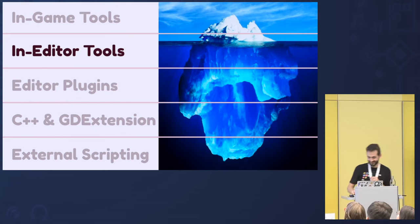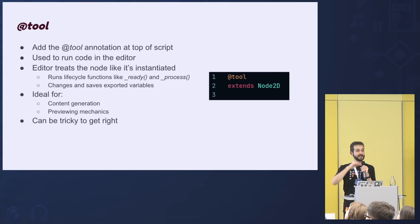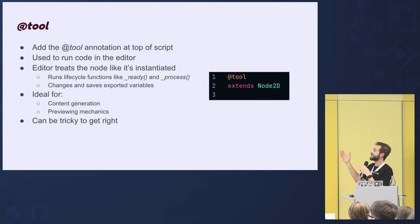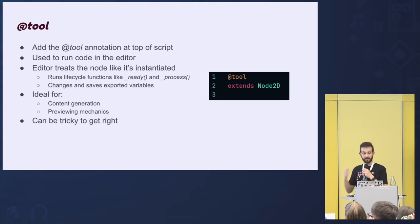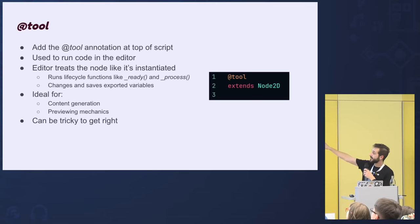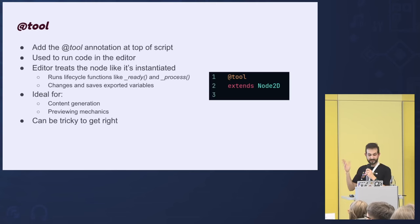Now we go one level deeper: in-editor tools. The first obvious one is the @tool annotation, which you put at the top of a script. When you open a node or scene that has a script with this annotation, it will run in the editor — the node is treated as if it's instanced in the game. It runs lifecycle functions like _ready and _process, and is able to change the scene, change values, and change everything on the fly, which you can then save.